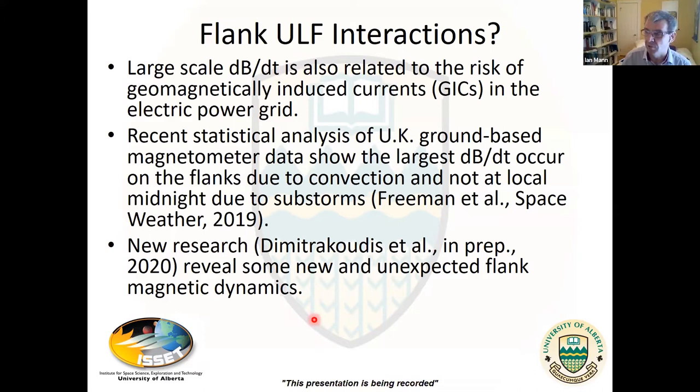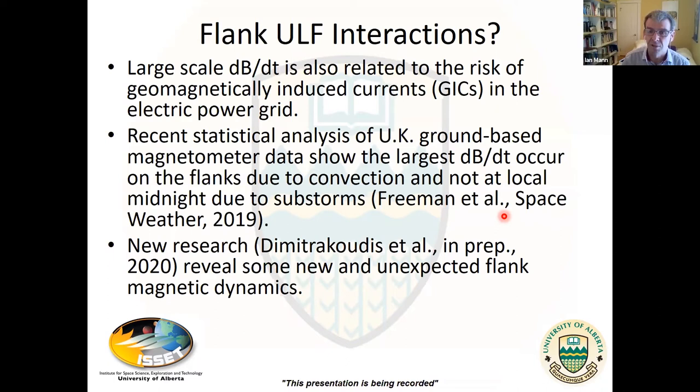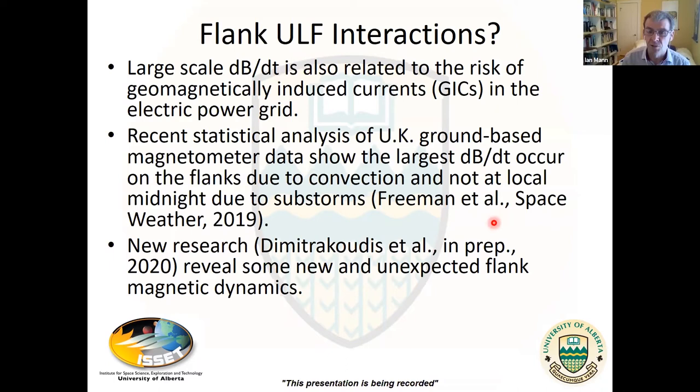This is consistent with a nice paper that Mervyn Freeman and colleagues published last year in Space Weather, where they looked at historic disturbances from UK magnetometers and found that the largest dB/dts were observed in the biggest space weather events on the flanks at mid-latitudes — not in the midnight local time sector. I believe the explanation is an importance for convection in driving disturbances which close in the ionosphere and drive large dB/dt on the ground, visible with our magnetometer arrays.